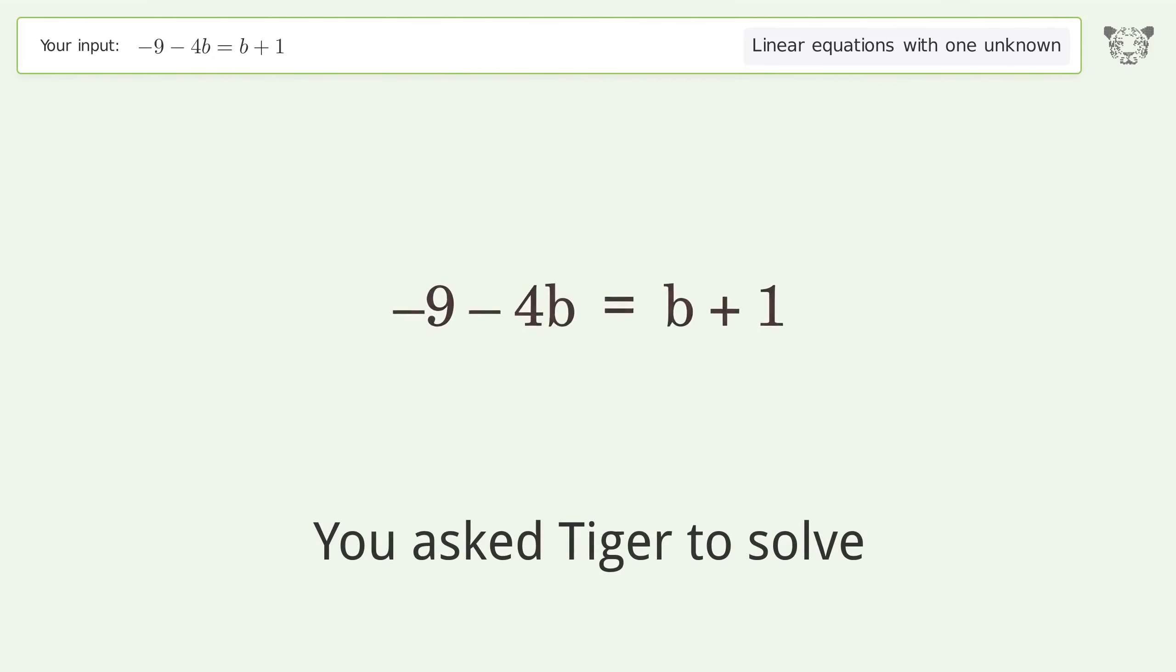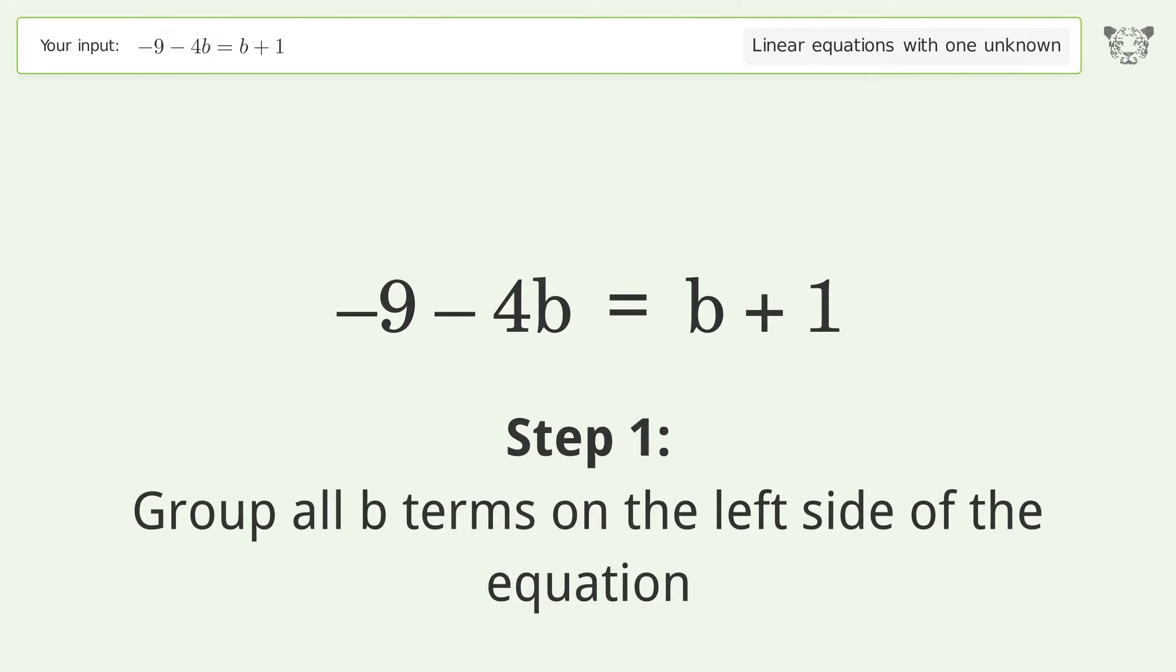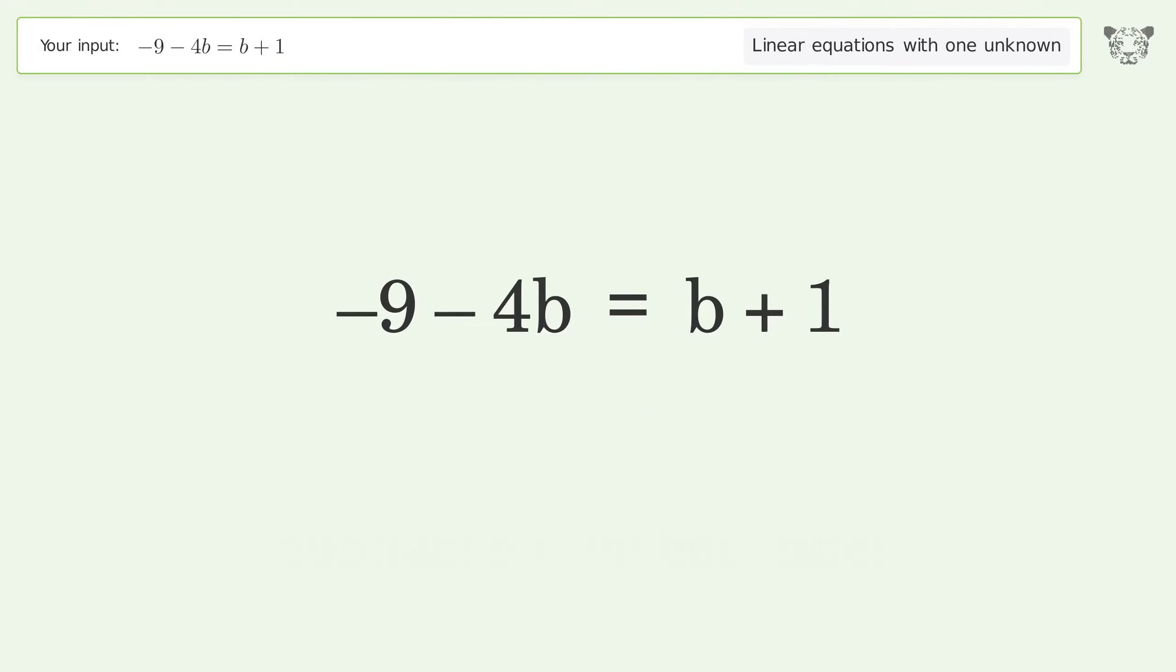You asked Tiger to solve this. This deals with linear equations with one unknown. The final result is b equals negative 2. Let's solve it step by step. Group all b terms on the left side of the equation. Subtract b from both sides.